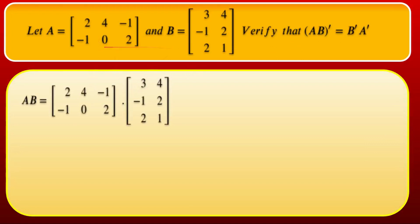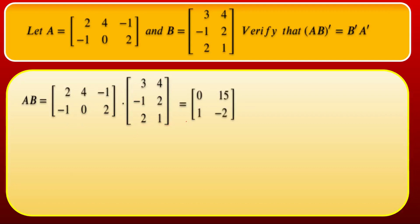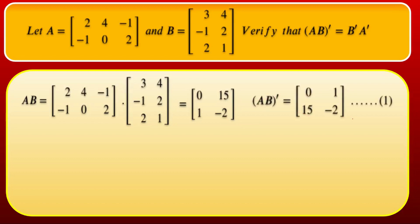First find AB. A is 2×3 and B is 3×2, so multiplication is possible giving a 2×2 matrix. AB = [[2·3+4·(−1)+(−1)·2, 2·4+4·2+(−1)·1], [(−1)·3+0·(−1)+2·2, (−1)·4+0·2+2·1]] = [[0, 1], [1, −2]]. Then (AB)^T = [[0, 1], [1, −2]]^T = [[0, 1], [1, −2]].